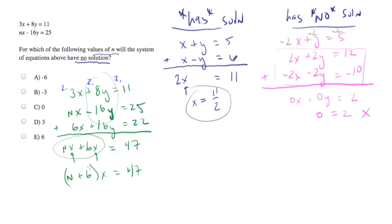And the only way to make it so that this left side of the equation goes to 0 is to set n equal to negative 6. And let's try that. Let's plug negative 6 in for n plus 6. And what you end up with is 0 equals 47, which is not true. And you see that negative 6 becomes the answer.